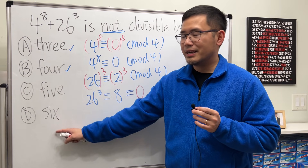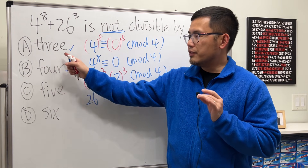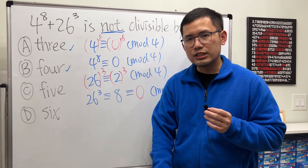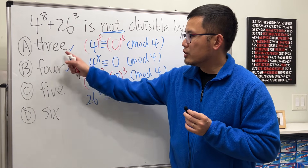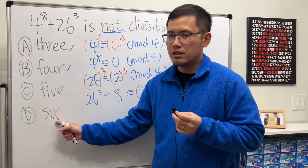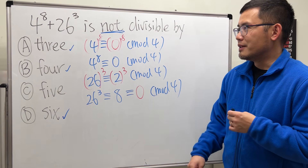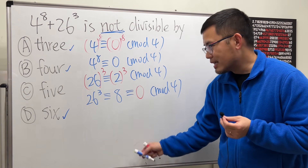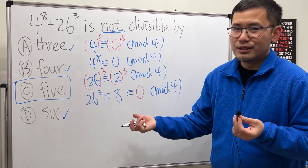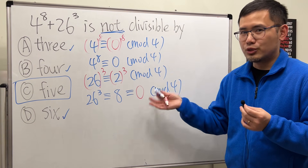Now for 6: if a number is divisible by 3 and also divisible by 4, then it must be divisible by 3 times 4, which is 12. And if a number is divisible by 12, it must be divisible by 6. So this expression is also divisible by 6. That confirms the answer is C — the expression is not divisible by 5. But let's also verify this with modular arithmetic.